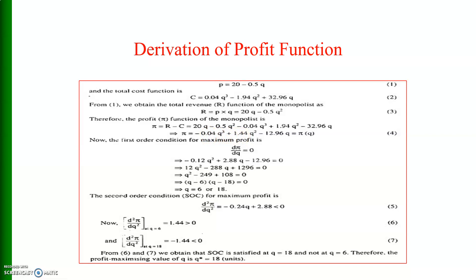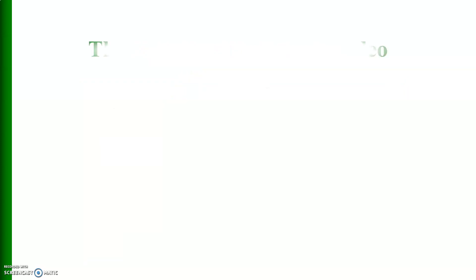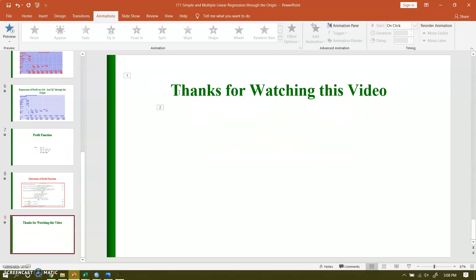You must be very careful whenever you are specifying regression — whether your regression should be through the origin or include an intercept term. All software includes the constant term by default, but sometimes you must obey the theory. According to theory, in the profit function we suppress the intercept term. Thank you very much for watching. Let me also show you in Excel how I did that.